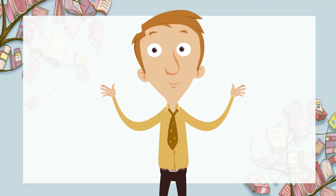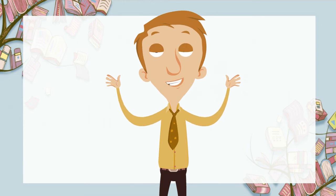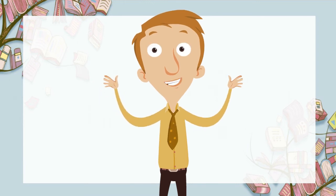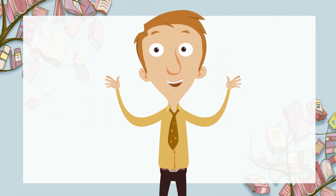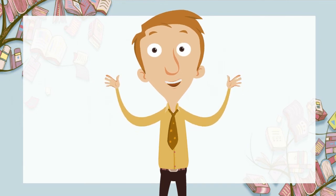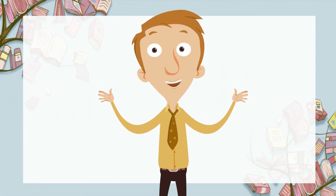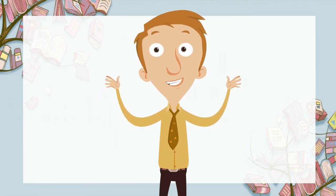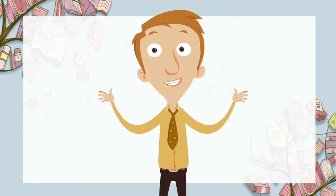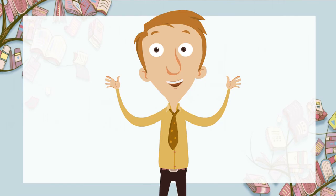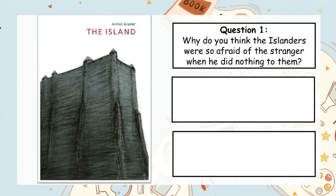Quite a different story this week than we've looked at the previous two weeks. This story is much, much darker, with deeper questions to be unpacked. I'm sure lots of questions popped into your head as you were reading that story. Here's a few questions that I thought of that we can discuss today. My first question — one I asked myself multiple times when reading this story — was: why do you think the islanders were so afraid of the stranger when he actually did nothing to them? Pause the video and write down your opinion on this question.